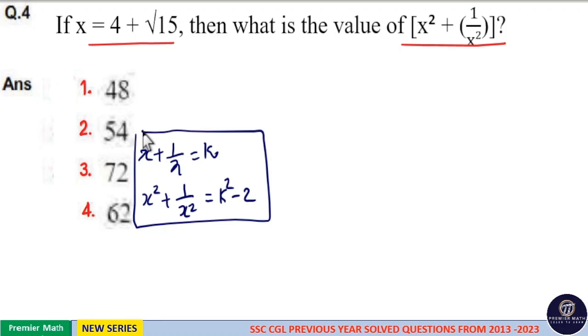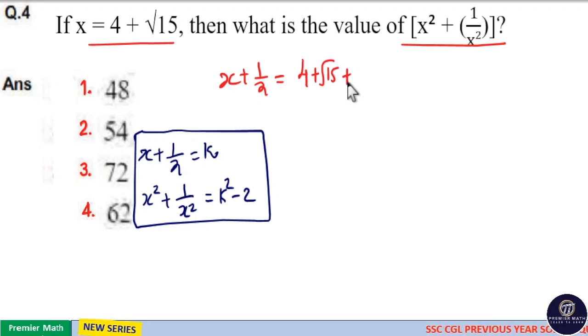This is just the expansion of a plus b the whole square formula. Here, find the value of x plus 1 by x, which is equal to 4 plus root 15 plus 1 by 4 plus root 15.